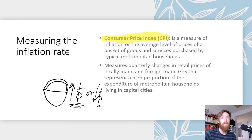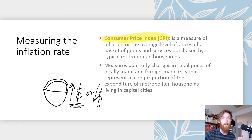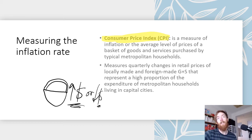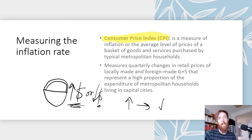The CPI focuses on goods and services that represent a high proportion of expenditure for households in capital cities. If the main goods and services people buy go up in price, that erodes purchasing power, meaning people have less disposable income. As a result, aggregate demand is likely to fall — so higher CPI means less consumption spending and lower aggregate demand overall.